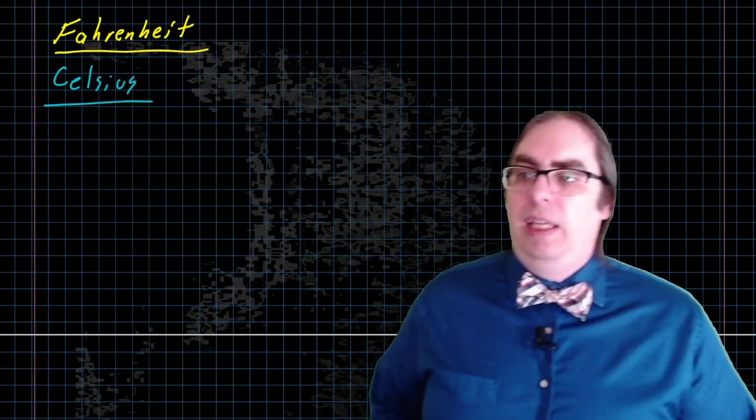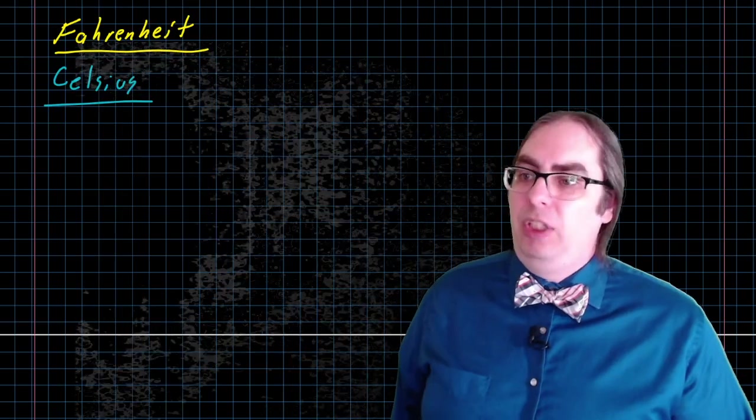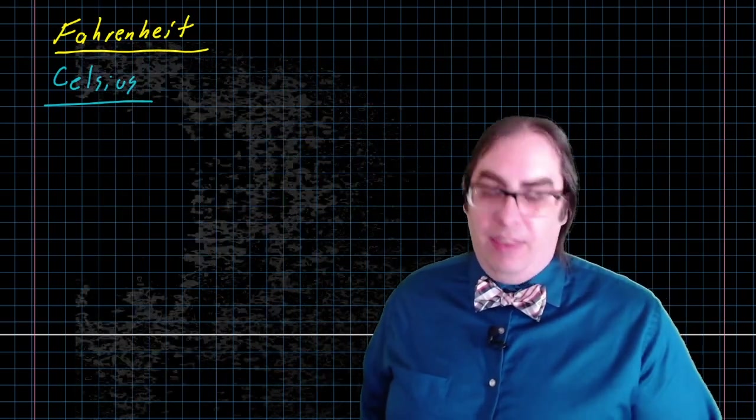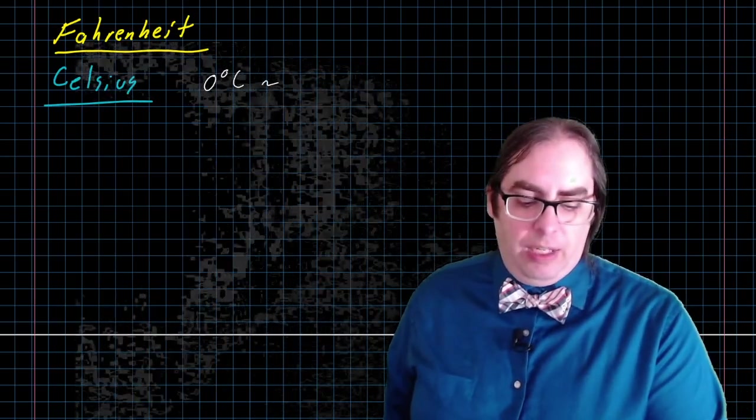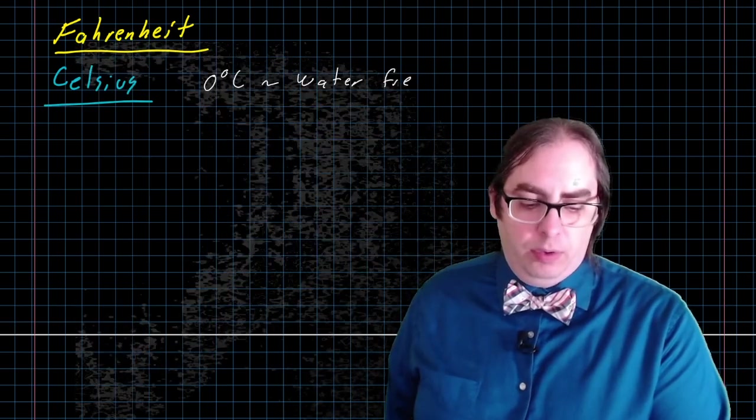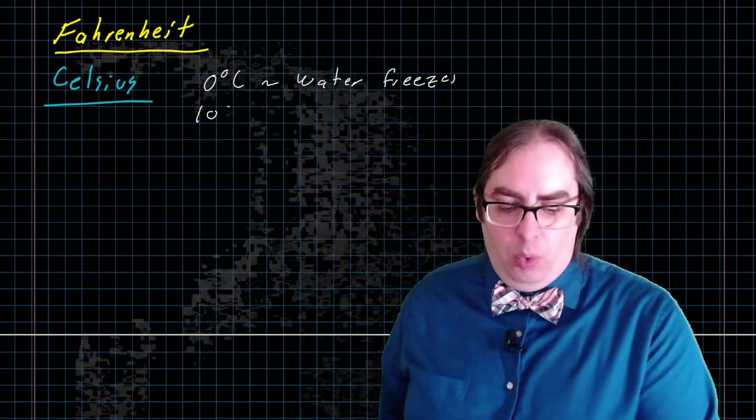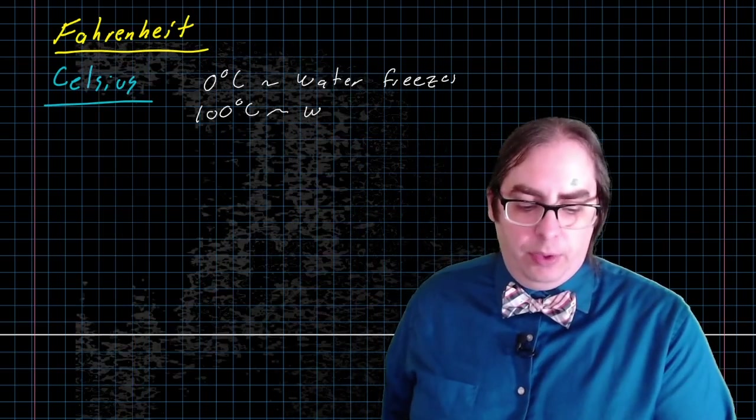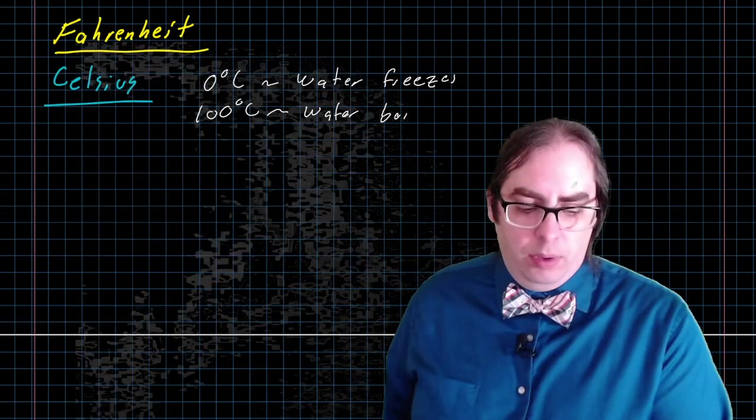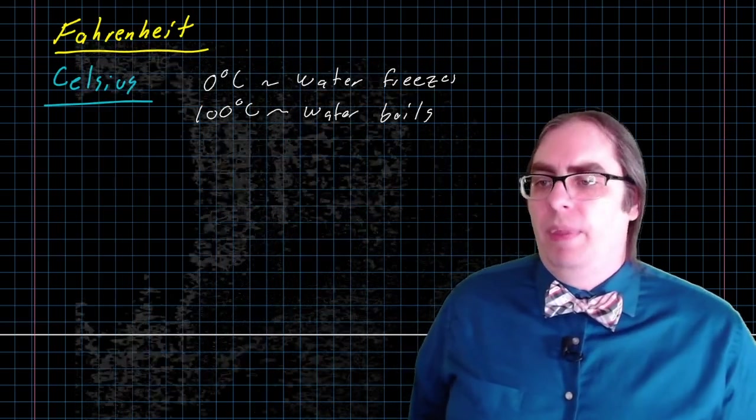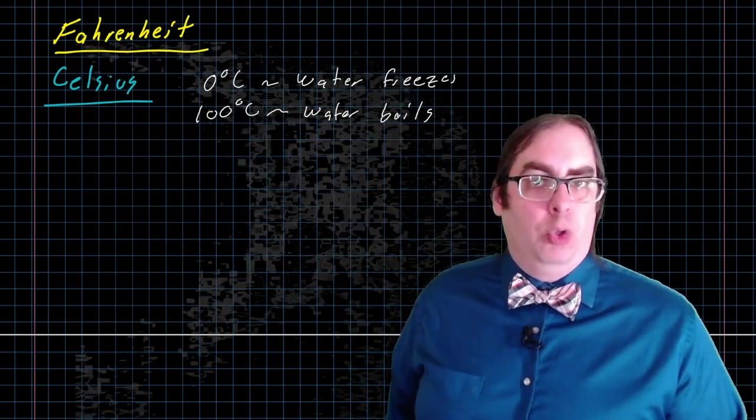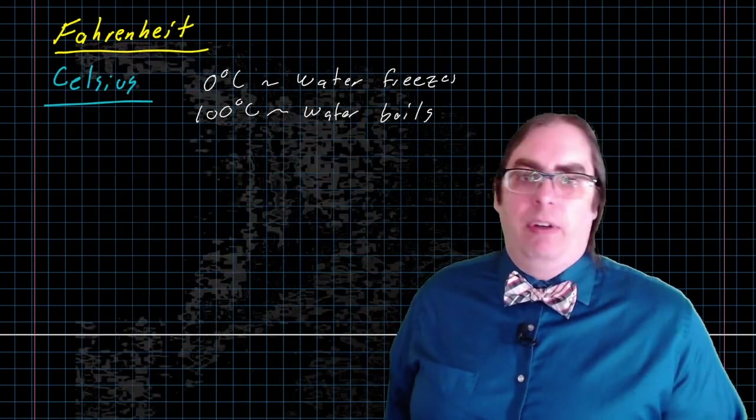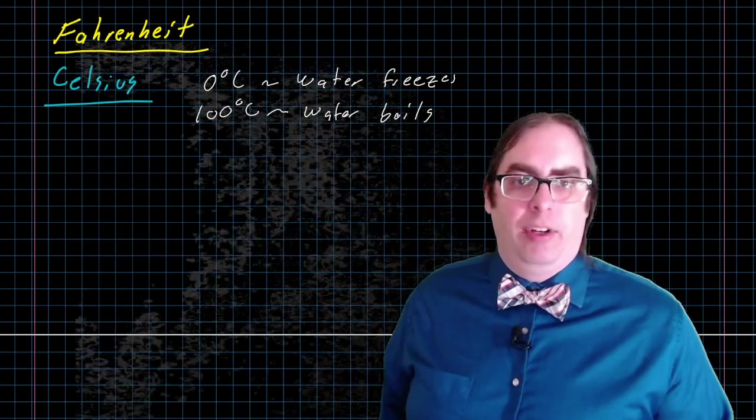Instead, in the SI system, we tend to use the Celsius scale. The Celsius scale is defined so that zero degrees Celsius is the temperature where water freezes. And 100 degrees Celsius is the temperature where water boils. And that relationship with water makes it a very useful scale for dealing with chemistry and also a very useful scale for dealing with any sorts of culinary activities.